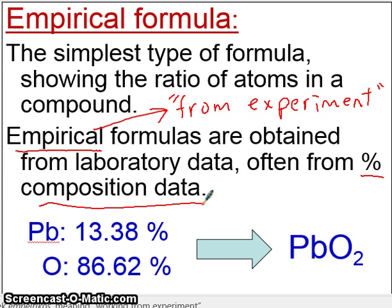For example, you would find a compound that has 13.38% lead and 86.62% oxygen. From these percentages, you would determine, you would work back and find the formula. This is what we're going to show you, how to take it from the percent into the formula.